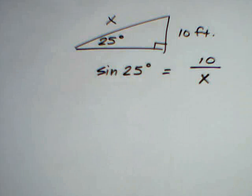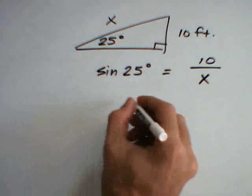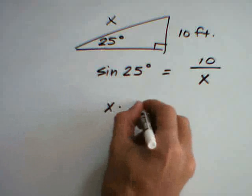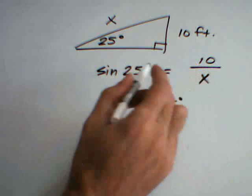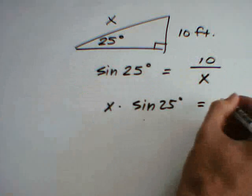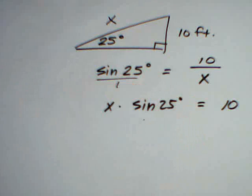And now to solve for x, we want to think of this as a proportion where we're going to cross-multiply. So, cross-multiplying, we get sine of 25 degrees multiplied by x is equal to 10, and of course, you can think of that as 10 multiplied by 1.